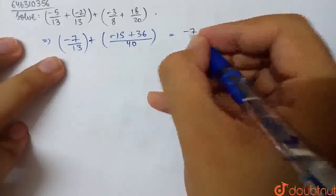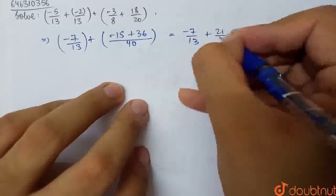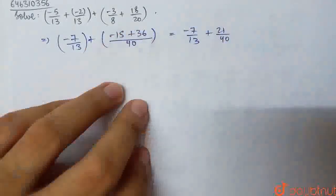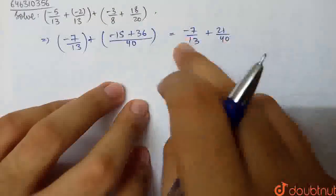So we have minus 7 by 13, then 36 minus 15, which is 21, plus 21 over 40. This is what we have. Now, after this, we need to make a common denominator between 13 and 40.